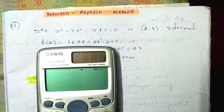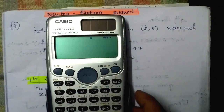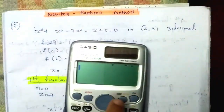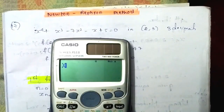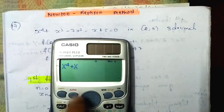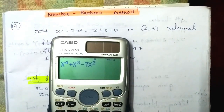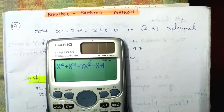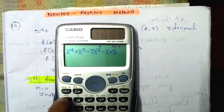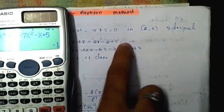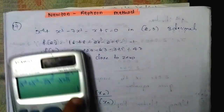You can use the calculator to solve the equation. Here I have a technique: use alpha x instead of typing all the numbers. You can directly use the variable as alpha x raised to 4 plus alpha x power 3 minus 7 alpha x squared minus alpha x plus 5. Press the calc key and put x value as 2. The answer is minus 1, which is near to 0, so we will go further.